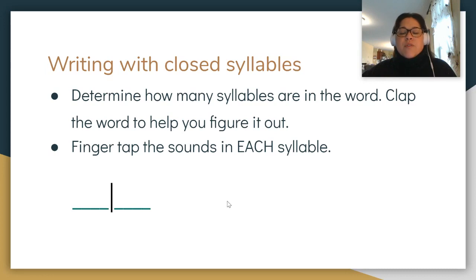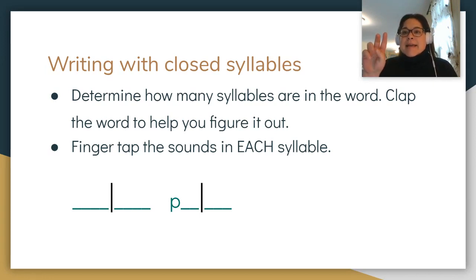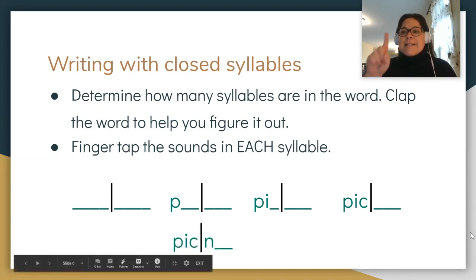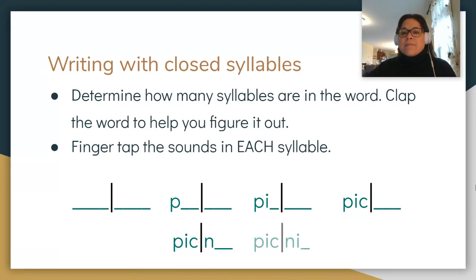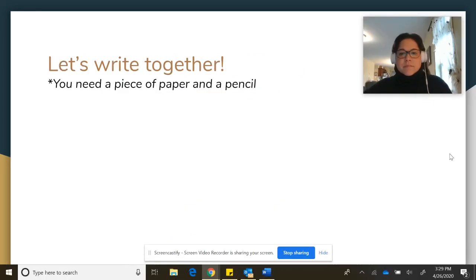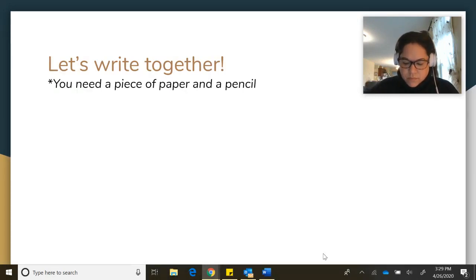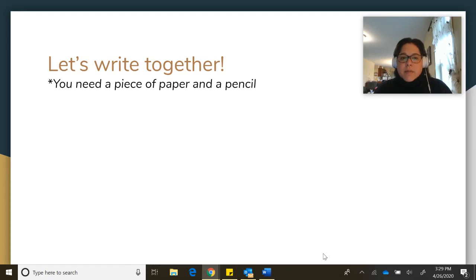So I know I have two word parts to work with here. 'Pic-nic.' Now I'm going to think about the first syllable: 'pick' — first sound, second sound, third sound. Now I'm going to think about the next syllable: 'pic-nic.' Let's write some together. You'll need a piece of paper and a pencil — if you haven't gotten one already, please go get one now.